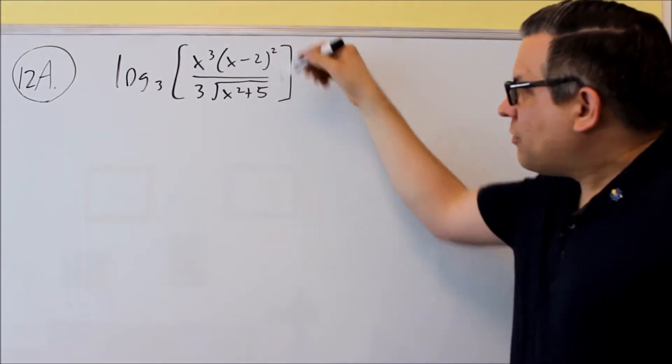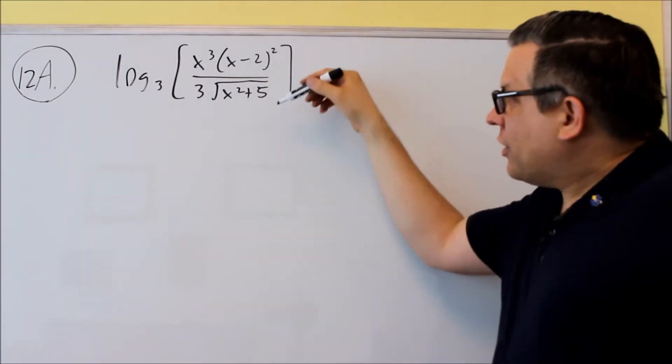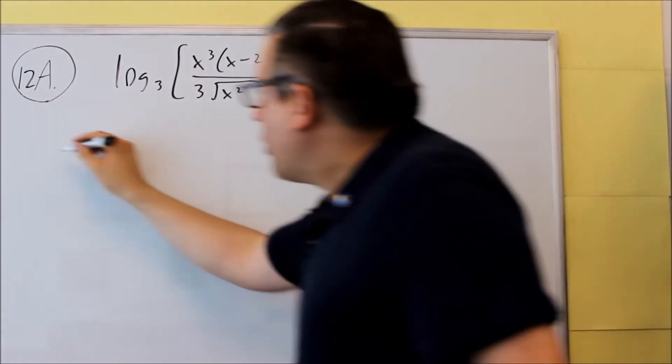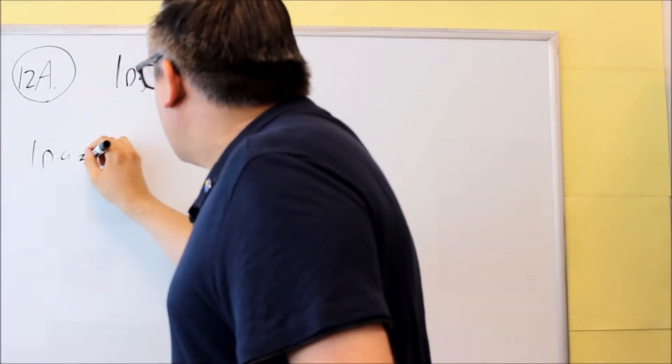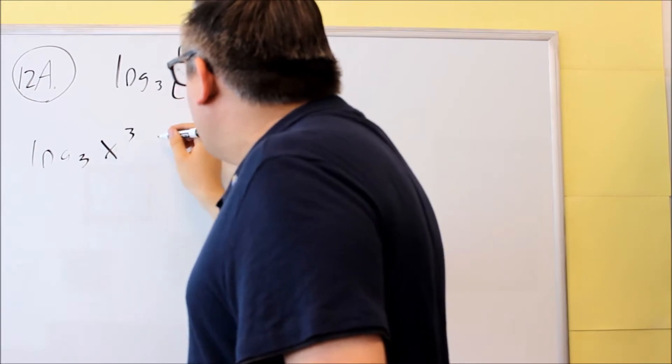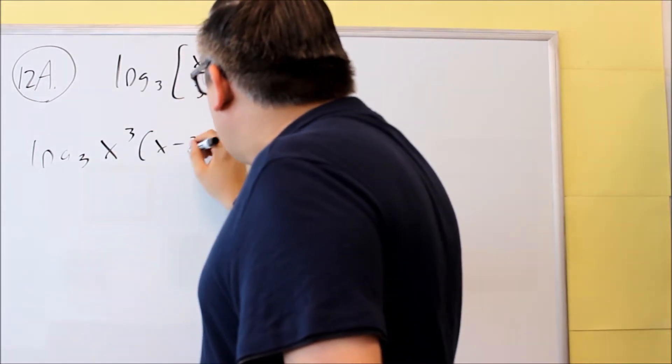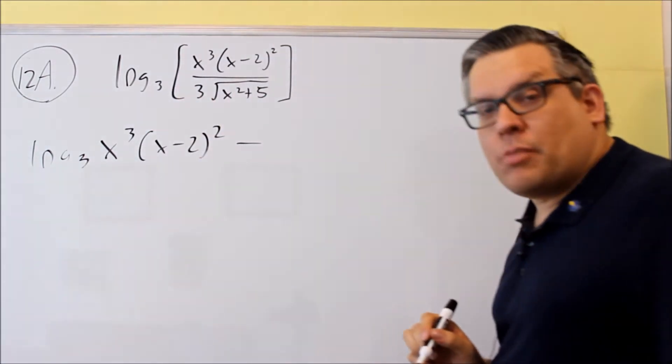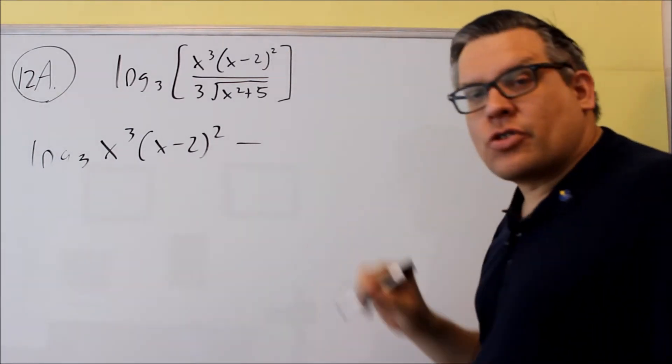So let's first start by taking this one and getting out of the fraction form, and we're going to use our log property to separate that. That's x cubed, x minus 2 squared, we're going to do minus, division turns into subtraction.